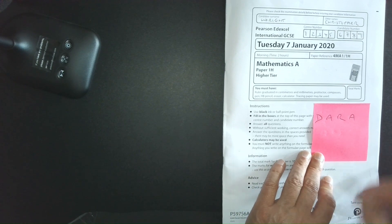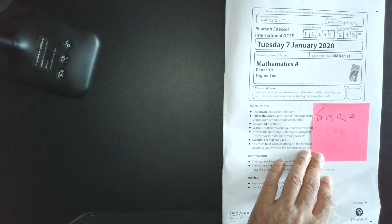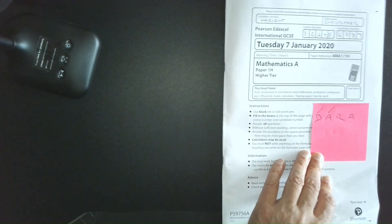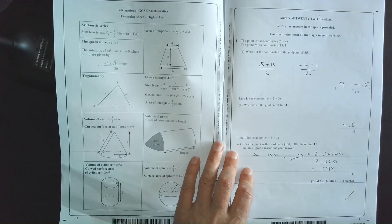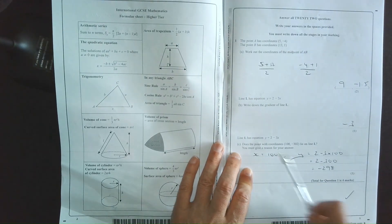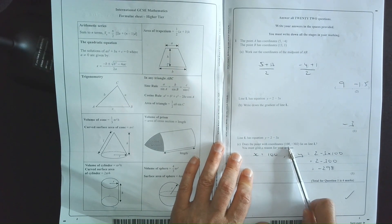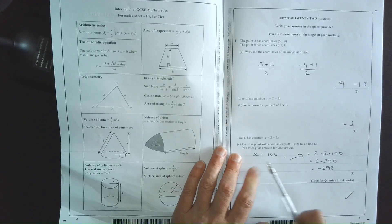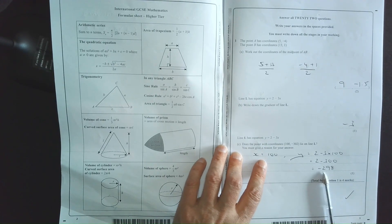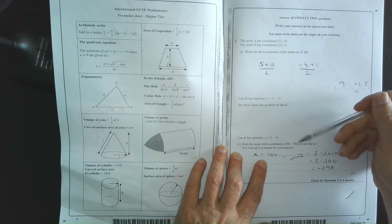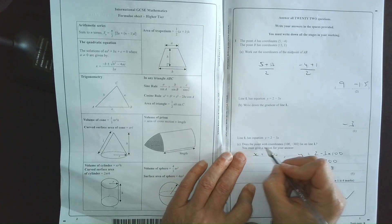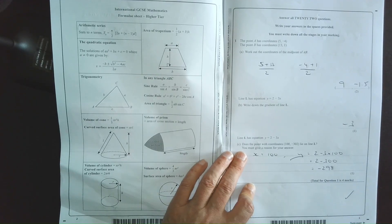We have done the D for DARA. We have checked that we've actually done every question. Now, D, A. The A is, have we answered every question? Let me show you what I mean. In question 1C here, the question says, does the point with coordinates 100, minus 302 lie on the line? You must give a reason for your answer. I've substituted x is 100 in, and I've found that when x is 100, y is minus 298, not minus 302. But have I answered the question? The question is, does the point lie on the line?